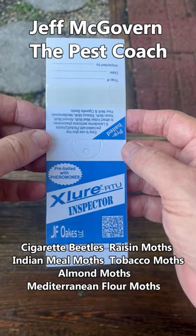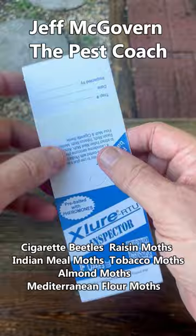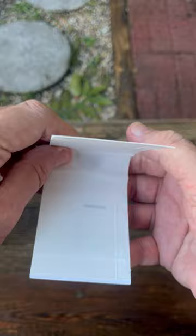Jeff McGovern the Pest Coach taking a look at the Xlure RTU inspector from JF Oaks. It's labeled for cigarette beetles, raisin moths, Indian meal moths, tobacco moths, almond moths, and Mediterranean flower moths.